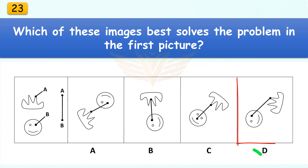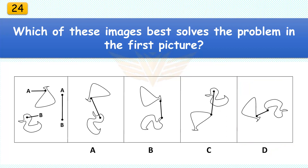Which of these images best solves the problem in the first picture? The correct answer is D. Rotate the happy face 90 degrees and then rotate the crown almost 90 degrees.